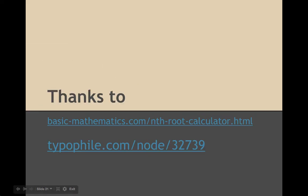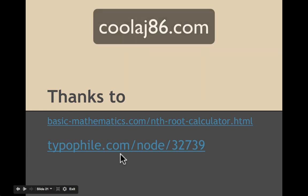So hopefully that makes sense. Just a quick thanks to basicmathematics.com, which is where I found the nth root calculator that gave me all of those jumbled, nonsensical numbers. And then typofile.com suggested the font to use to make the math expressions more clear. It's, I think it was Cambria. Turned out to be, I think, a pretty good choice.